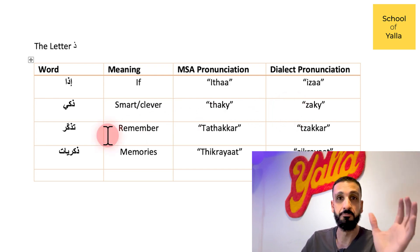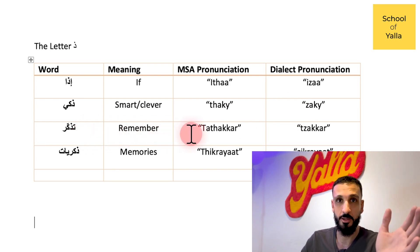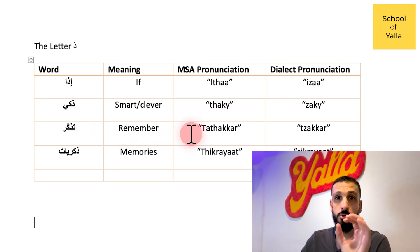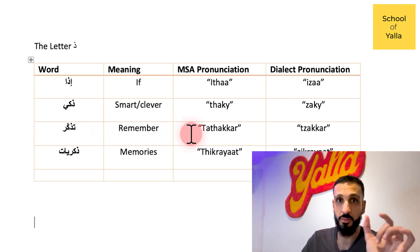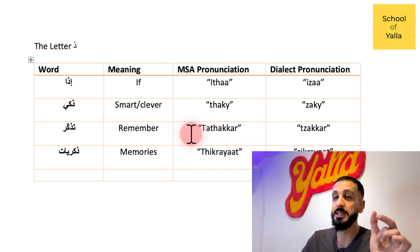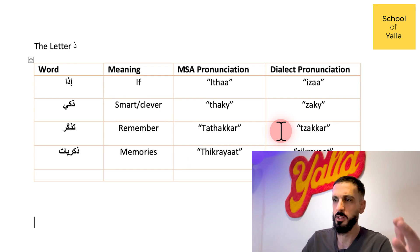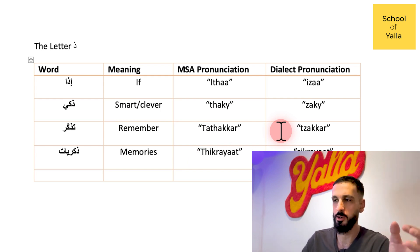"Tathakkar" in MSA means "remember". In ammiya, you could pronounce it "thakkar", but in dialect you could also hear it with a Z sound: "tzakkar" or "zakkar".